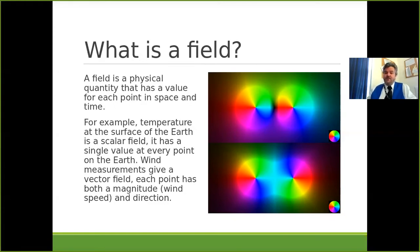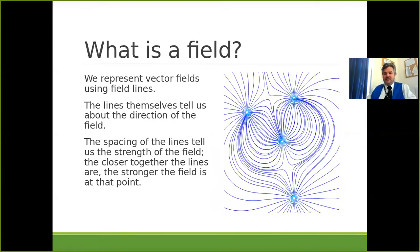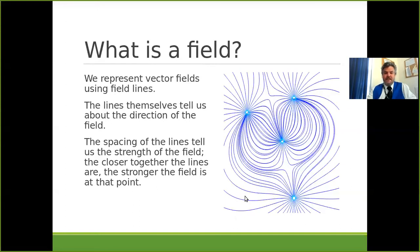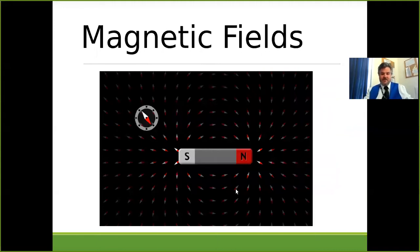Magnetic fields follow very similar rules to electric and gravitational fields. Field lines show the direction of force on a north magnetic pole. You can't actually get a north magnetic pole on its own - with every north there has to be a south. The density of the field lines tells you how strong the field is: field lines close together mean a strong magnetic field, field lines further apart mean a weaker field.